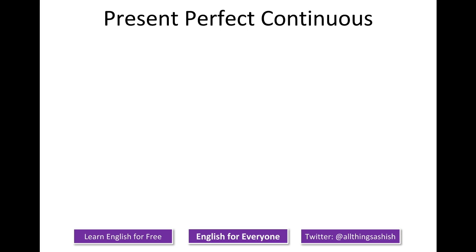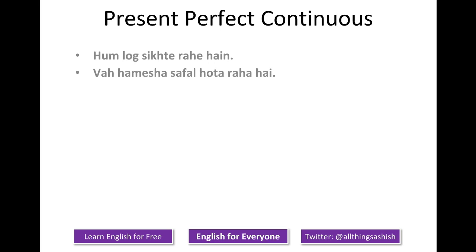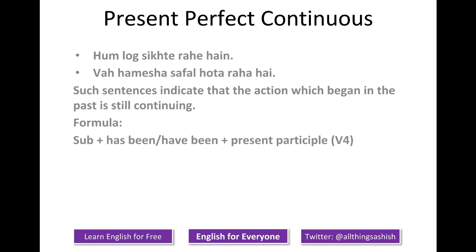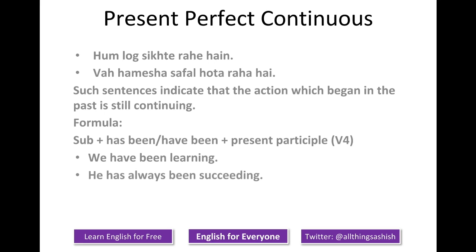Let's look at present perfect continuous. 'We are learning. We are learning and have always been successful.' Such sentences indicate that the action which began in the past is still continuing. The formula: subject plus 'has been' or 'have been' plus present participle, or the fourth form of verb. For example: we have been learning. He has always been succeeding.